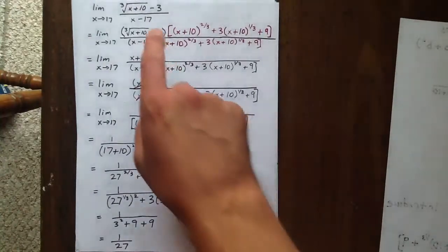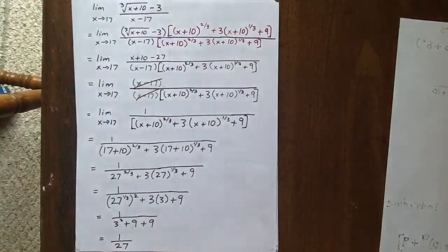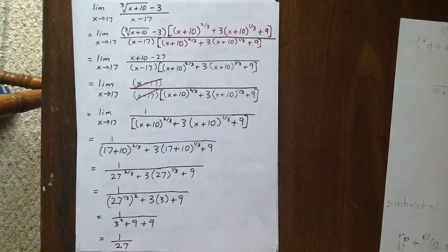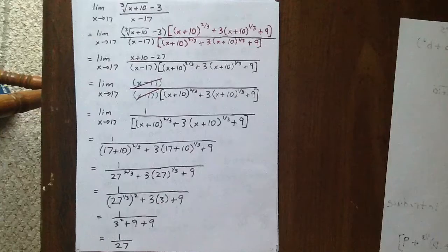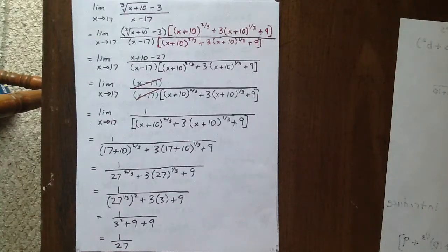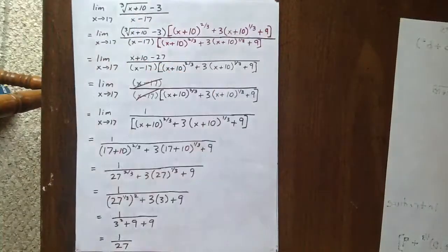People sometimes make the mistake of multiplying numerator and denominator by the cubed root of x plus 10 plus 3. That's not how you rationalize in this case, because we don't have a difference of squares situation. We have a difference of cubes situation, as indicated by the cubed root.